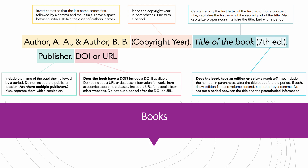There are many details that need to be followed to cite works correctly. Beginning with author, invert names so that the last name comes first, followed by a comma and the initials. Leave a space between initials. Retain the order of authors' names. Place the copyright year in parentheses and end with a period. For the title of the book, capitalize the first letter of the first word. For a two-part title, capitalize the first word of the second part of the title. Also capitalize proper nouns. Italicize the title. End with a period.